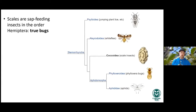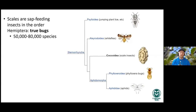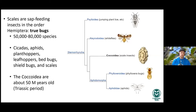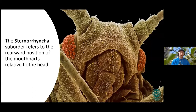Scales are sap-feeding insects in the order Hemiptera — the true bugs. A cladogram shows their relationship to other groups: evolutionarily they're a little older than whiteflies and psyllids, and a little younger than aphids and phylloxera. There are around 50 to 80,000 species of true bugs, incredibly diverse and some of the most important insects for agriculture and plant-insect interaction. This includes cicadas, aphids, planthoppers, leafhoppers, bed bugs, shield bugs, and scales in the Coccoidea superfamily. This group is very old — around 50 million years — and is believed to have first arisen around the Triassic period.